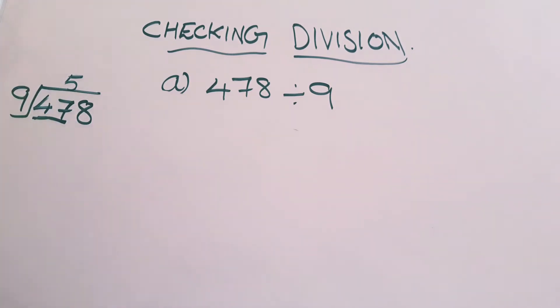9 fives, write 5 on the top of 7. Multiply, 9 fives are 45. Underline. 7 minus 5 is 2. Bring down 8. This is 28.